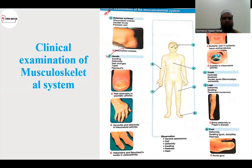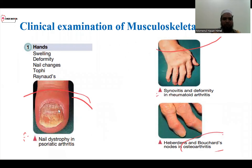This is the clinical examination of the musculoskeletal system. What do we see? As we say, we are doing clinical examination of the musculoskeletal system — what do we see in our hands?